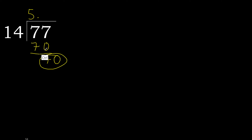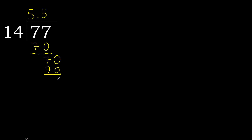Ok, 70. 14 multiplied by 5 is 70 — is not greater. Subtract: 0. 0, therefore finish it.